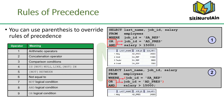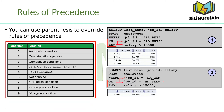The rules of precedence determine the order in which expressions are evaluated and calculated. The table lists the default order of precedence. However, you can override the default order by using parentheses around the expressions that you want to calculate first.